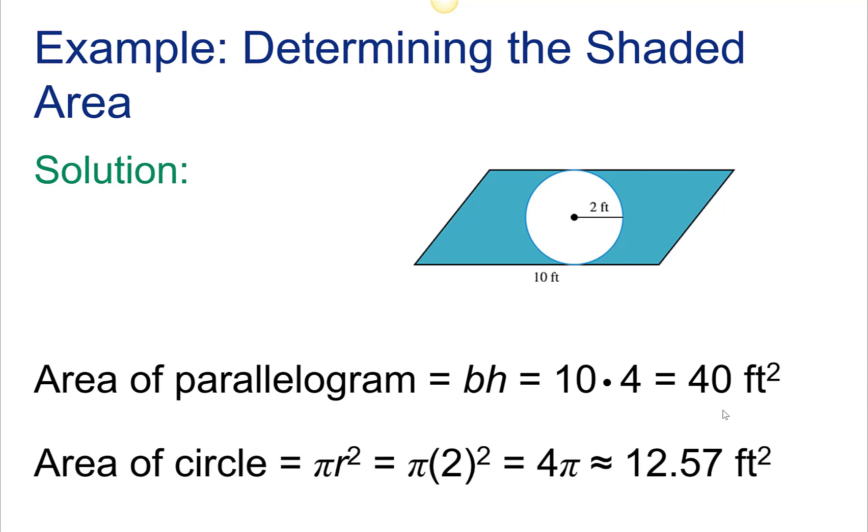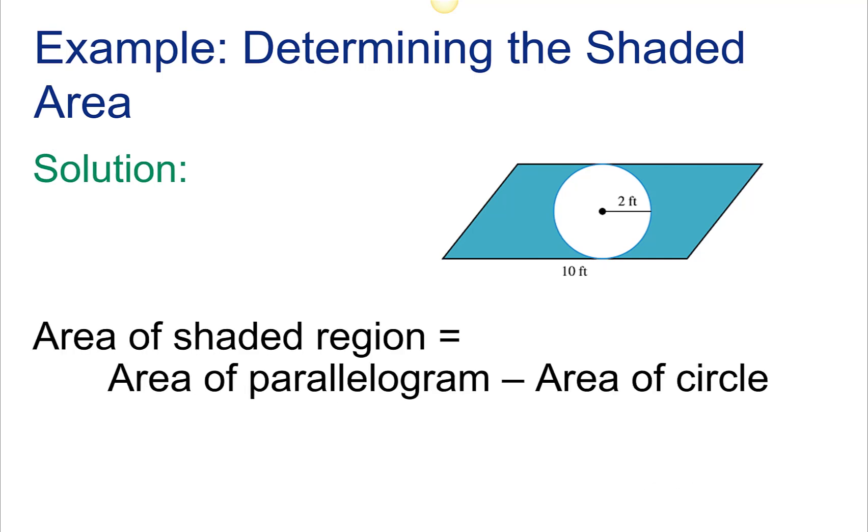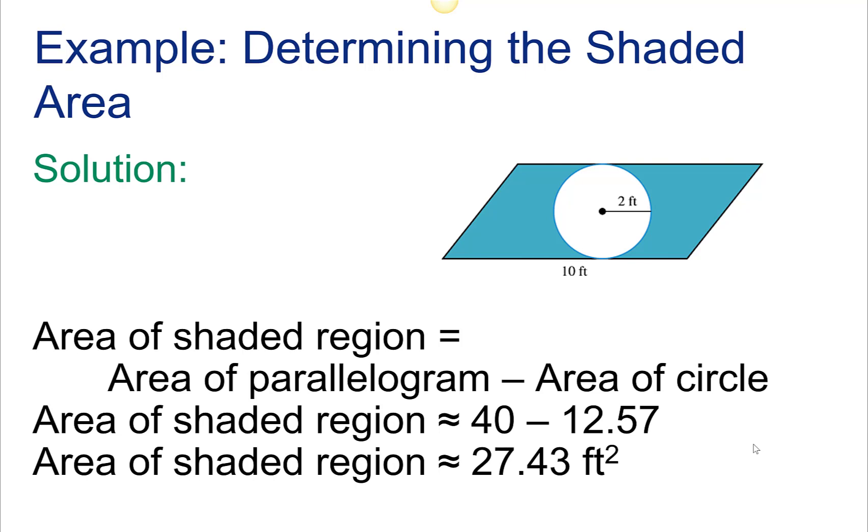Then I need to find the area of the circle, which is pi r squared, 4 pi, or approximately 12.57 feet squared. Then I'm going to subtract to find the shaded region. I'm going to take 40 and subtract 12.57, and I get approximately 27.43 square feet.